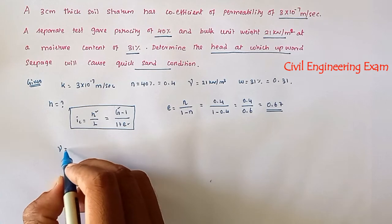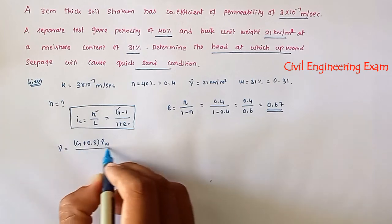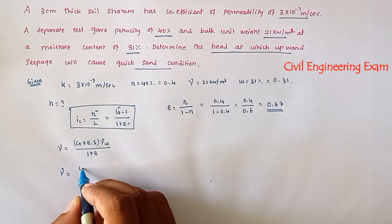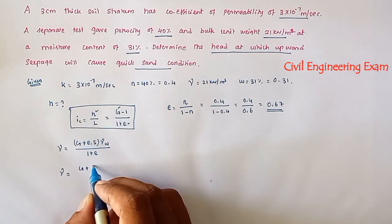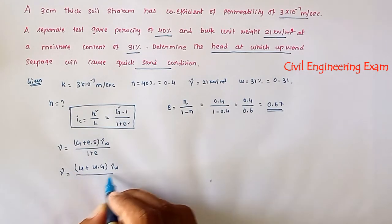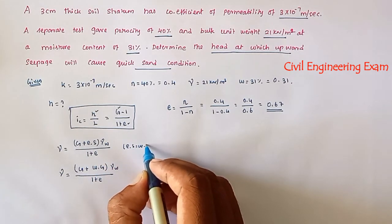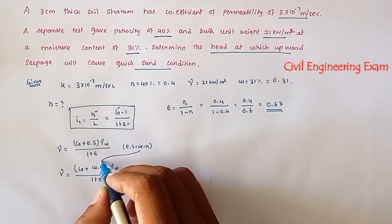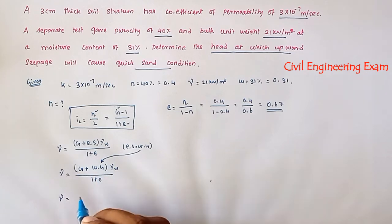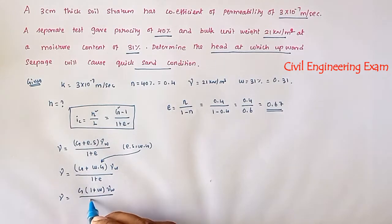Now we find G using the formula: γ = (G + e·S)·γw / (1 + e). Since e·S = w·G, we substitute to get γ = G·(1 + w)·γw / (1 + e). This allows us to take G as a common factor and substitute all known values.